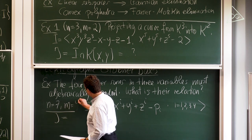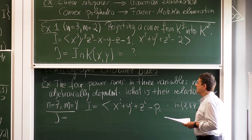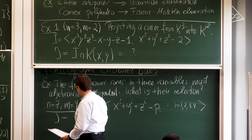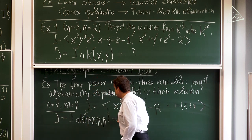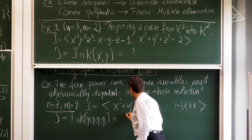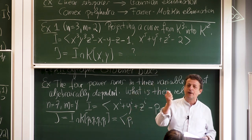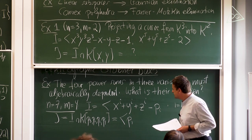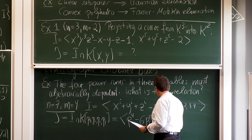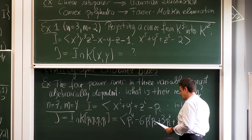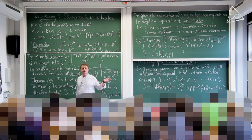We project onto the p-coordinates, eliminating the x's. The elimination ideal j is the intersection of our ideal with the subring generated by p₁, p₂, p₃, p₄. That turns out to be a principal prime ideal: p₁⁴ − 6p₁²p₂ + 3p₂² + 4p₁p₃ − 6p₄ = 0. If you divide by 6 and rearrange, you have a formula writing p₄ in terms of the first three power sums.